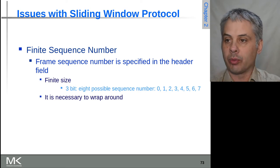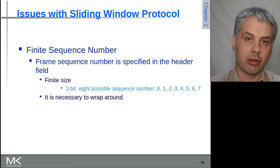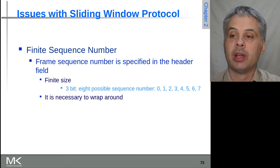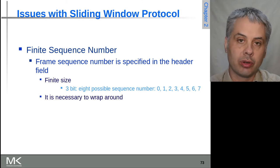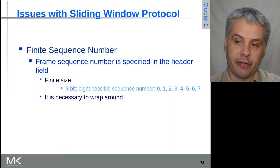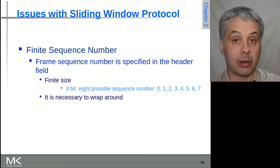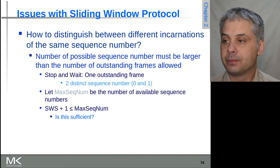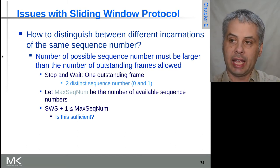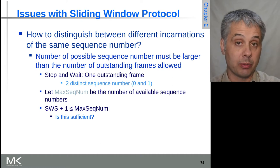Let's look at some more issues with sliding window. One of those issues is that we do have to have a finite sequence number. Unless you want to waste a lot of the frame or packet size on the sequence number, it will be limited, and we have to correctly handle the situation where the sequence number wraps around. If we have a three-bit field, there are eight possible values, and after sending eight frames we have to wrap back from sequence number seven to zero. So effectively we have different incarnations of the same sequence number over long periods of time, or if the link is very fast, potentially over quite short periods of time.